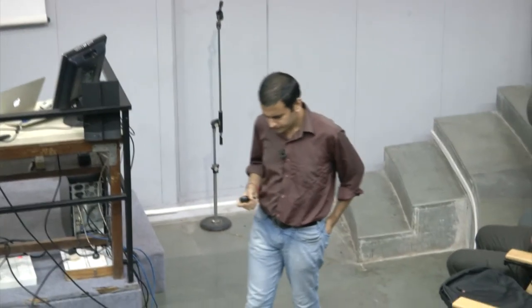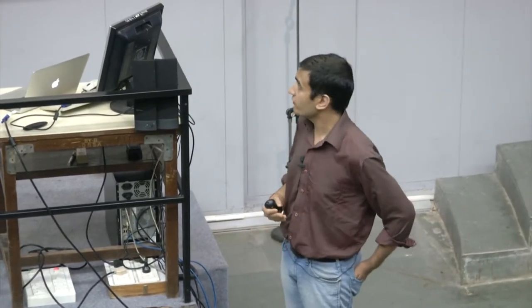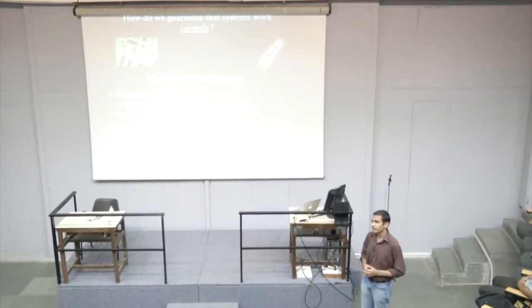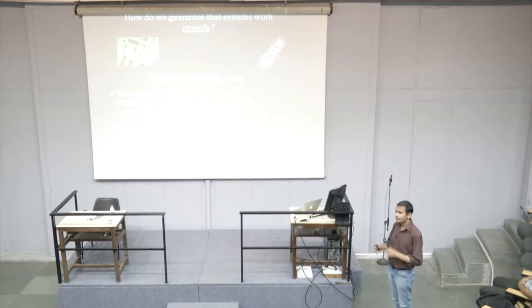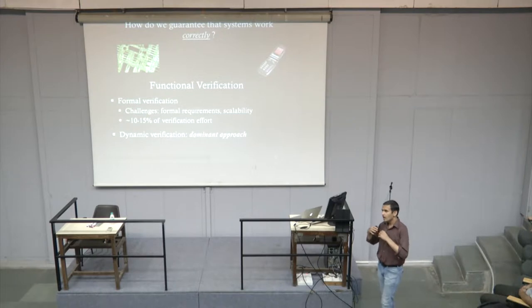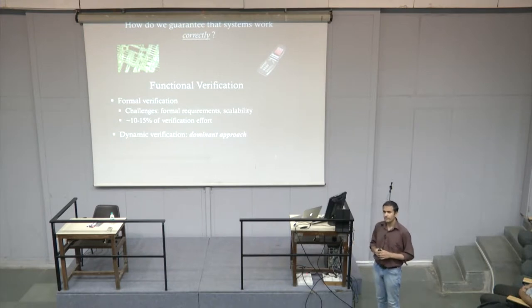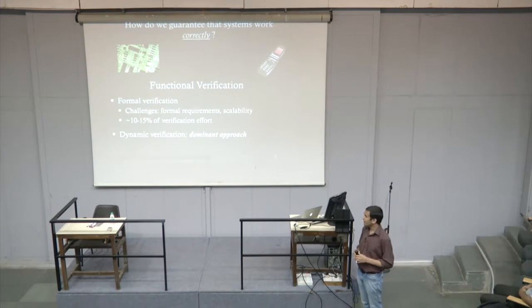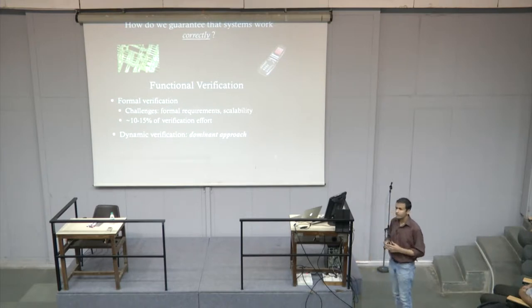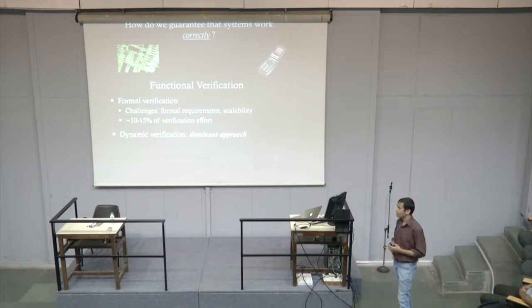One of the big problems that all of us as designers face is how do we guarantee that the systems we design work correctly — this is part of what we call functional verification, where given a design we try to verify whether it satisfies the desired functionality. In functional verification there are usually two parts: formal verification, where the idea is to model the system formally and use formal tools to verify it. About 10 to 15 percent of the verification effort in industry goes through this paradigm. Key challenges are that writing formal specifications is hard and the scalability of the formal tools is limited.